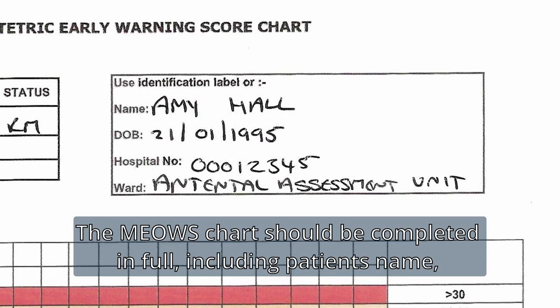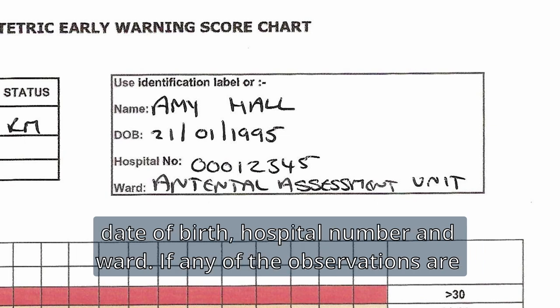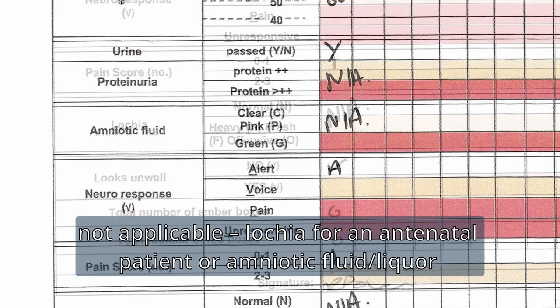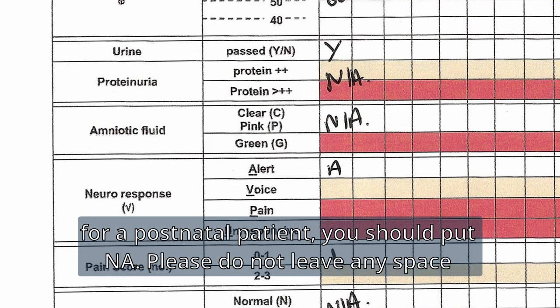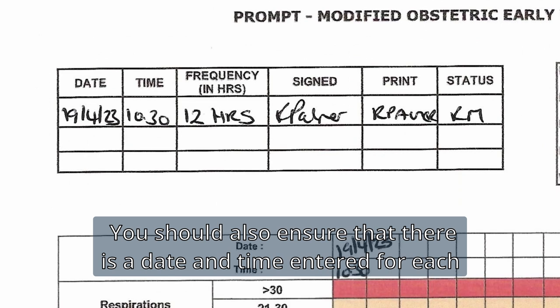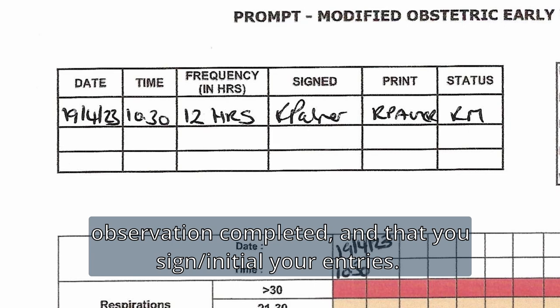The MEOWS chart should be completed in full, including the patient's name, date of birth, hospital number, and ward. If any observations are not applicable — lochia for an antenatal patient or amniotic fluid or liquor for a postnatal patient — you should put an N/A. Please do not leave any space blank. Ensure there is a date and time entered for each observation and that you sign and initial your entries.